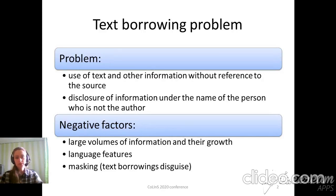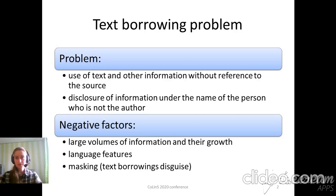Let's consider the text-borrowing problems. These problems have two issues. First of them is the use of text and other information without reference. Second is disclosure of information under the name of a person who is not the author. There are many negative factors that negatively influence processing documents and plagiarism detection. The main of them are volume of information and their growth, language features, and masking.